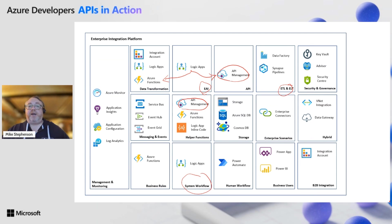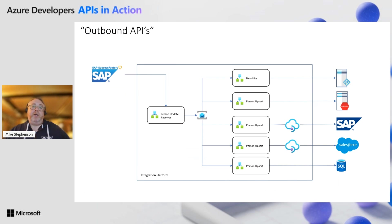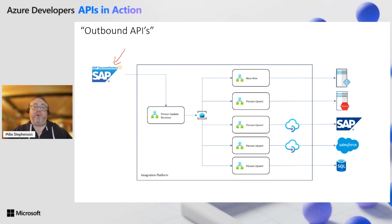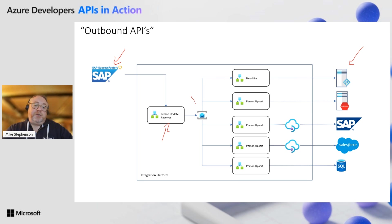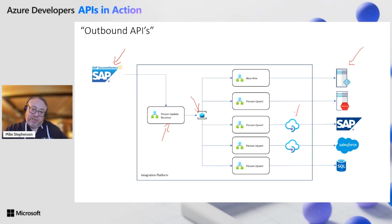Let's imagine a scenario where we have an integration with SuccessFactors, which is an HR system. In this case, we're publishing updates to employees, and on the right-hand side we have a number of target systems that care about different messages — for example, a new hire or an employee whose details changed. Technologies like Logic Apps and Service Bus handle that enterprise application integration, doing pub-sub patterns that trigger different integrations. API management helps facilitate these integrations as well.